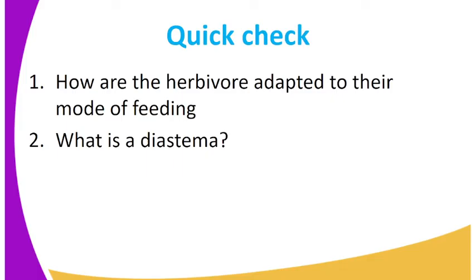So, there is an assignment for you. Number 1: explain how the herbivores are adapted to their mode of feeding. Number 2: what is a diastema?